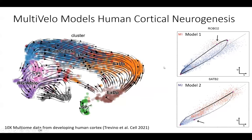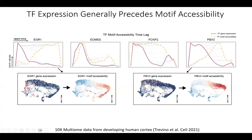We've also applied the model to other data sets, including one from human cortical neurogenesis, where we were able to identify clear examples of Model 1 versus Model 2 genes as well.